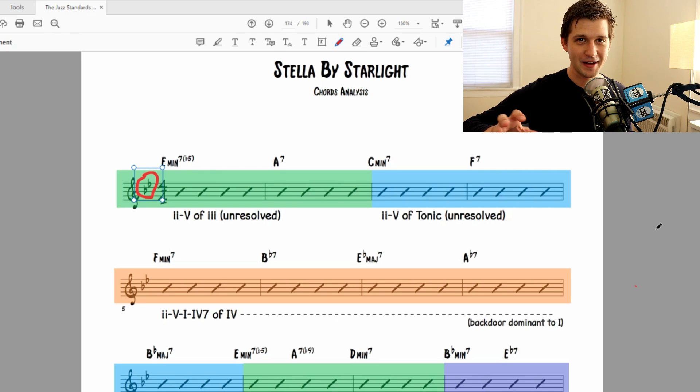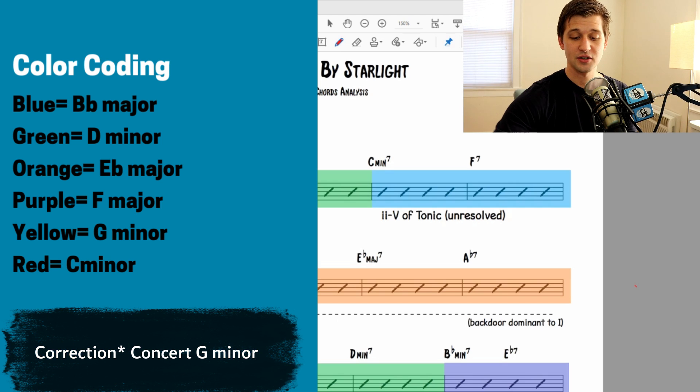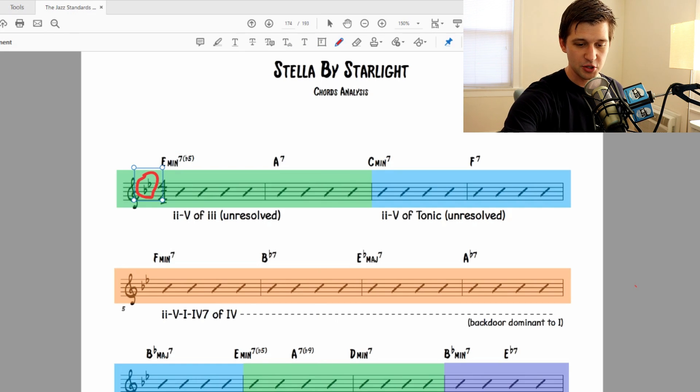The other way we're going to try to think about this song is by different key centers, and that's where the color coding comes in that you're seeing here. Because really, Stella by Starlight strays pretty far away from B flat major. So it can be helpful to both think about it in relation to B flat major, but also understand the different key centers that we're dealing with. So quickly, let me go through the color coding with you so that we're all on the same page. Blue is concert B flat major, the parent key center. Green is D minor. Orange is concert E flat major. Purple is concert F major. Yellow is concert G major. Red is concert C minor.